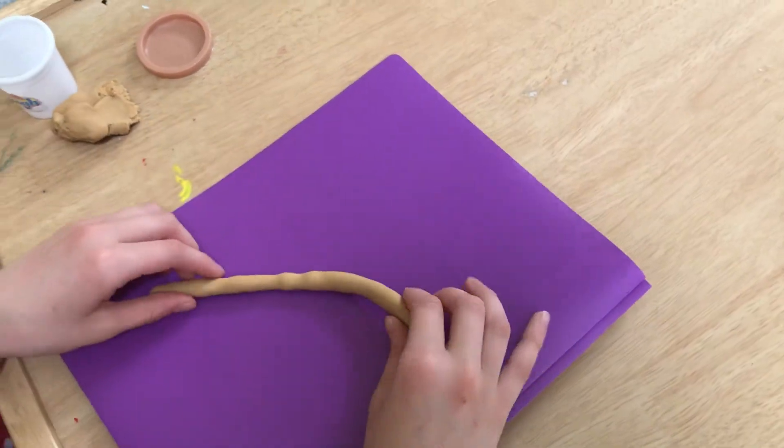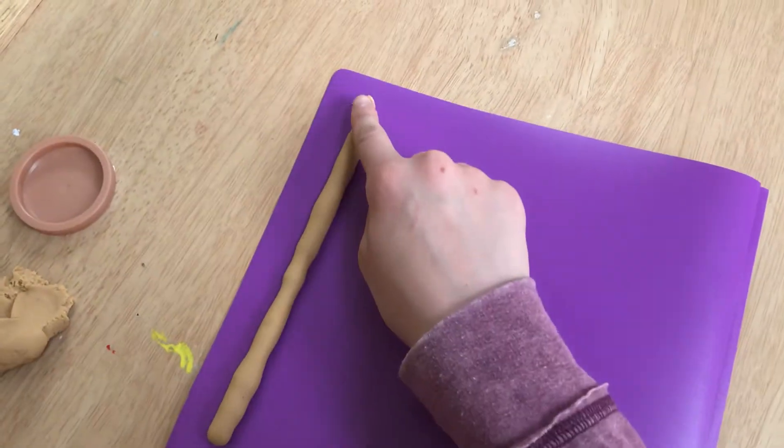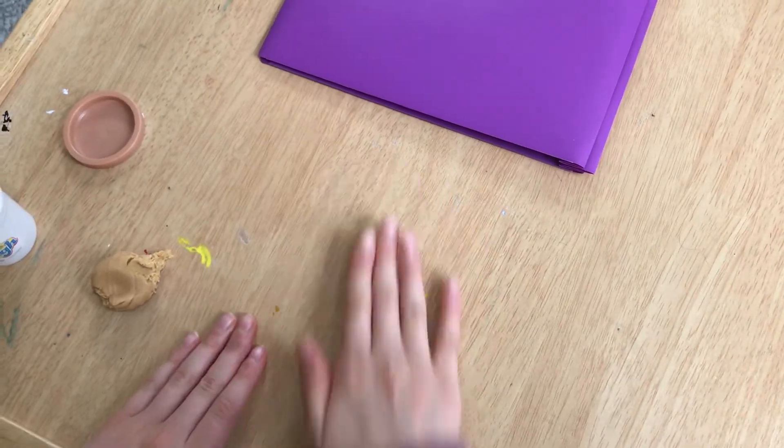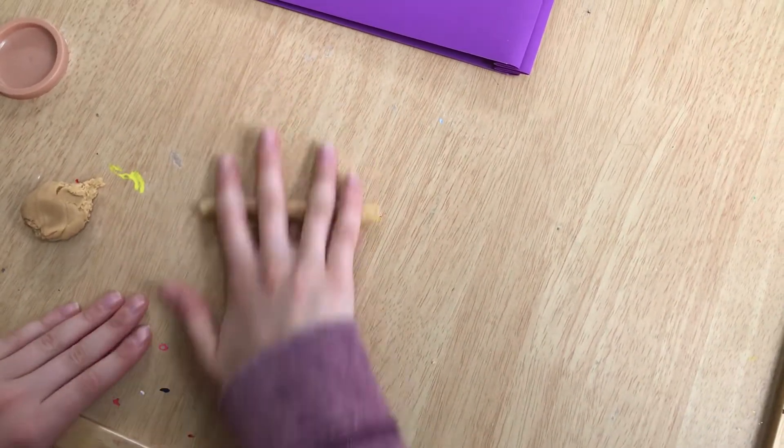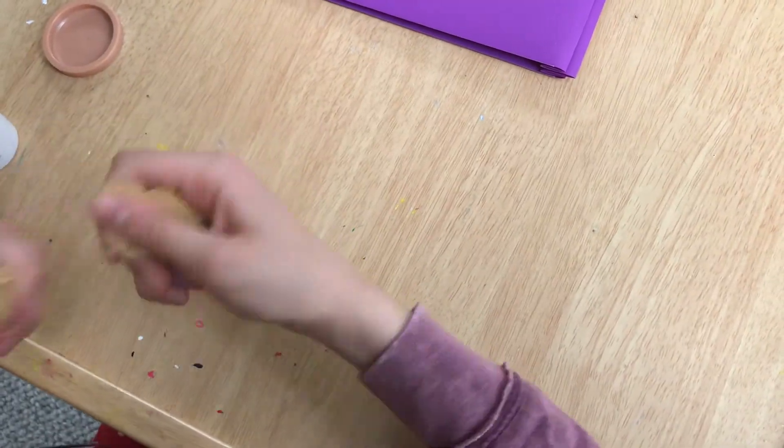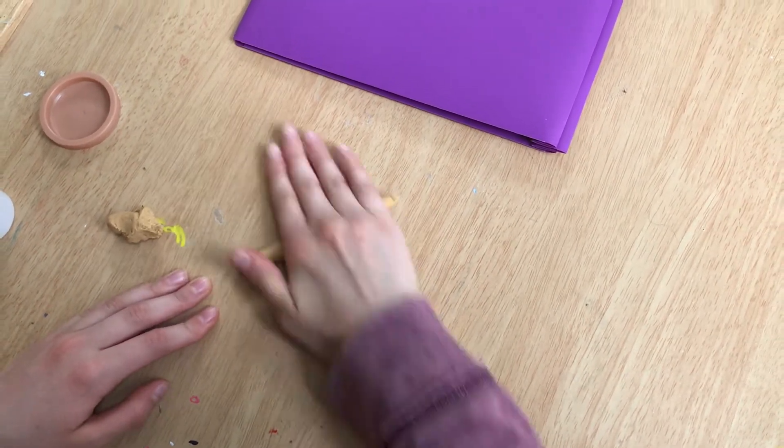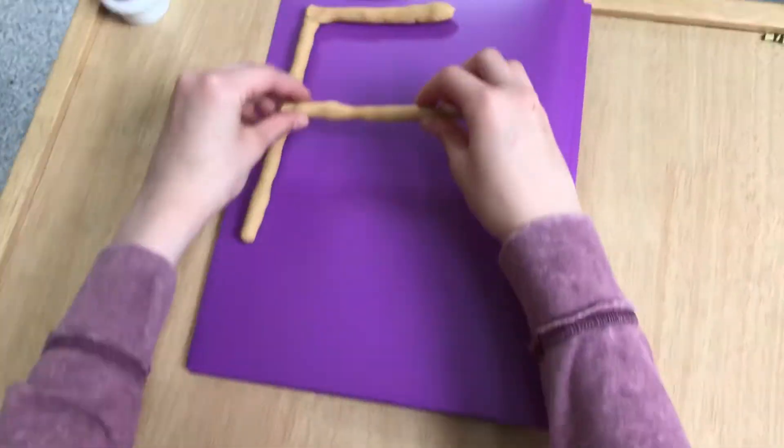Now we can start to make F. We have big line down, frog jump up, but now we have to make some little lines. Let's roll it out. Here's the top. Now we have to roll out our middle and give it a middle.